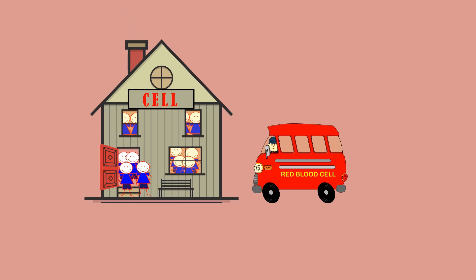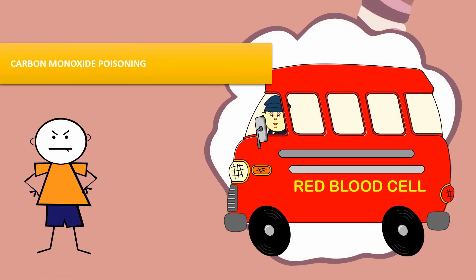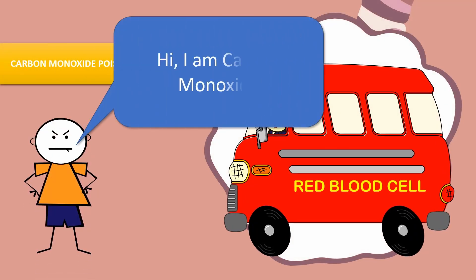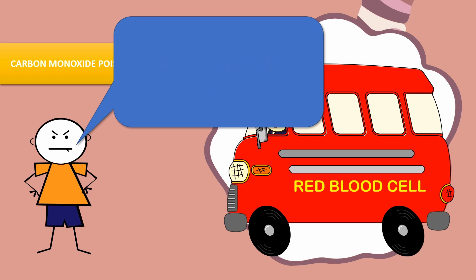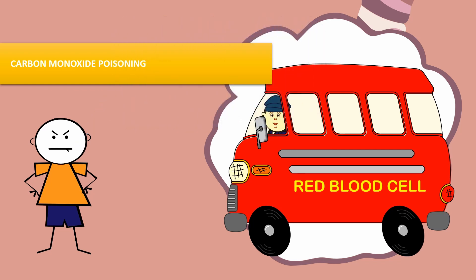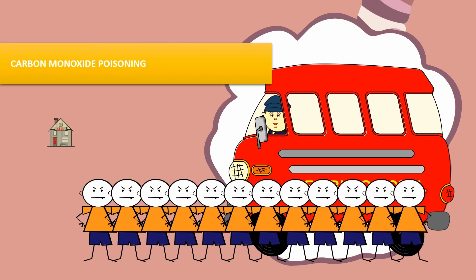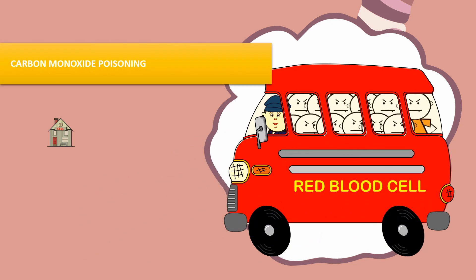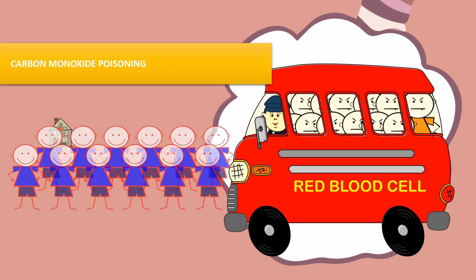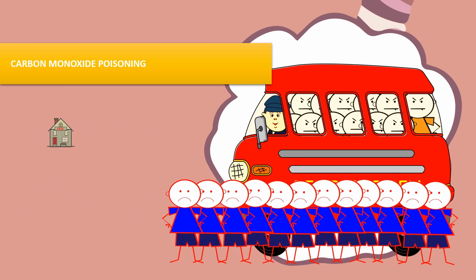Now we will discuss carbon monoxide poisoning. Carbon monoxide is produced due to incomplete combustion — for example, exhaust fumes from vehicles such as cars, motorbikes, and lorries, and also from cigarette smoke. In carbon monoxide poisoning, carbon monoxide has a high affinity for hemoglobin, meaning it will bind more easily with hemoglobin compared to oxygen. As a result, oxygen is unable to bind with hemoglobin and the cell is deprived of oxygen for metabolism.